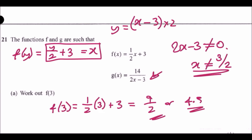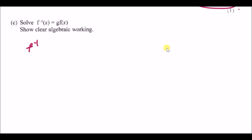Simplified, that gives 2x minus 6, and this is the inverse function f⁻¹(x) = 2x − 6. Now for gf(x): this means f enters g — the entire f function replaces the x value in g.